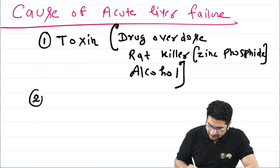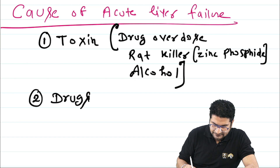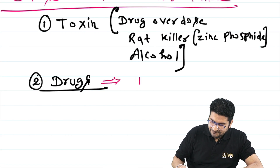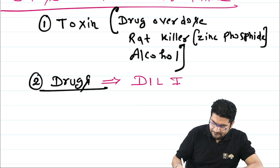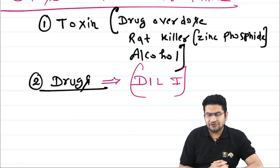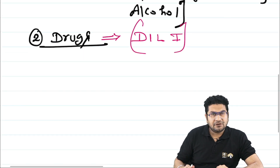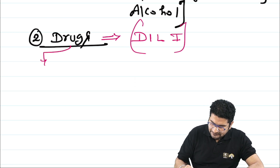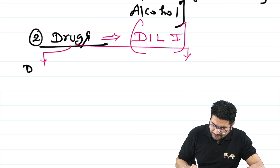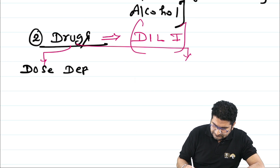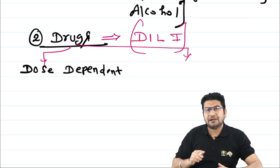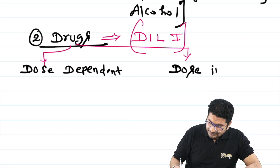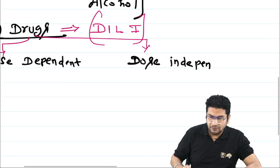Drugs can cause damage to the liver, which we call DILI — drug-induced liver injury. DILI can be of two types: some drugs damage the liver in a dose-dependent fashion, meaning damage only occurs when taken in excess. Other drugs can cause liver failure even in a single dose — these are called dose-independent.